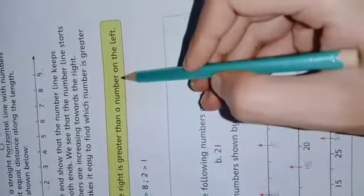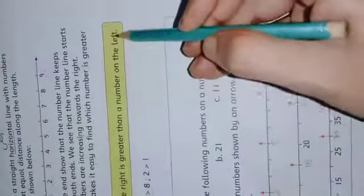A number on the right is greater than a number on the left. The right side number is greater as compared to the left side.